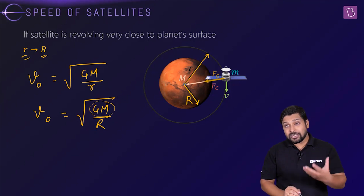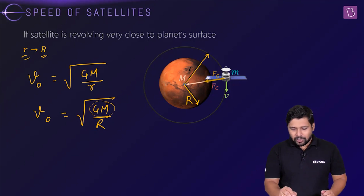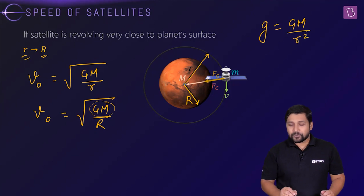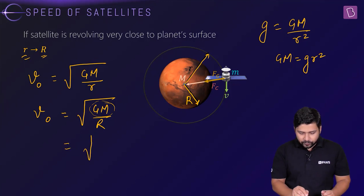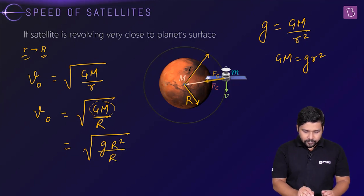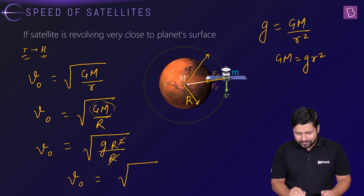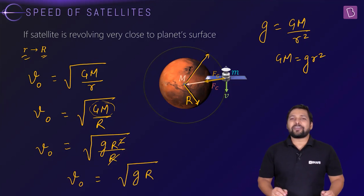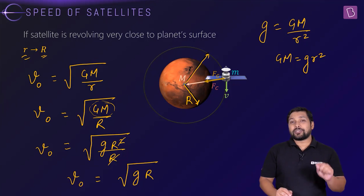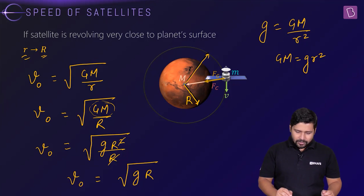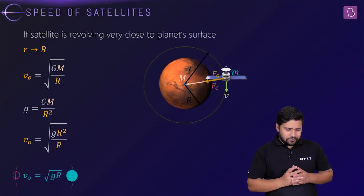We can replace GM with gR², since the acceleration due to gravity g = GM/R². Substituting: v₀ = √(gR² / R) = √(gR). This is a very important result — orbital velocity equals √(gR), expressed in terms of acceleration due to gravity and the planet's radius. This is valid for any general planet.